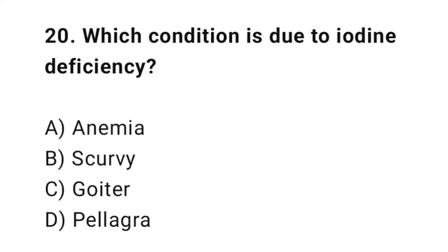Question number twenty: which condition is due to iodine deficiency? The right answer is C — goiter. Iodine prevents goiter and thyroid problems.